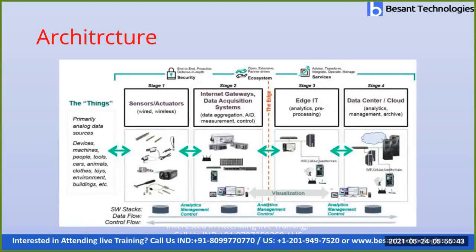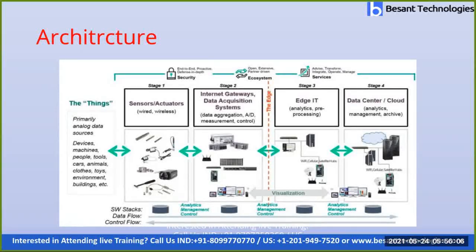Sensors and actuators — stage one — may be wired or wireless. They are used to get input from the environment. For this we need sensors or actuators, and you can also include electronics embedded devices here. Stage one covers the entire part of embedded devices.